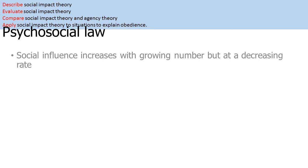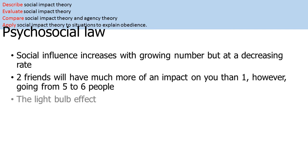Thinking about the number of the group, it's important to remember psychosocial law, also known as the light bulb effect. This suggests that yes, the influence of the group will increase as the number increases, but it gets to a point where it doesn't make that much difference. You're much more likely to be influenced by a group of two than one, or three rather than two. However, Latane suggests that going from five people to six people, the difference is actually quite small.